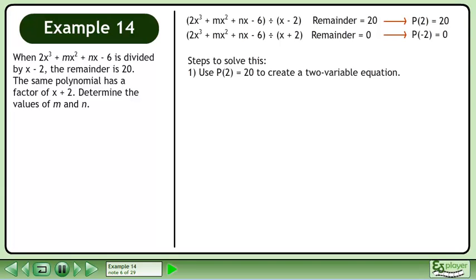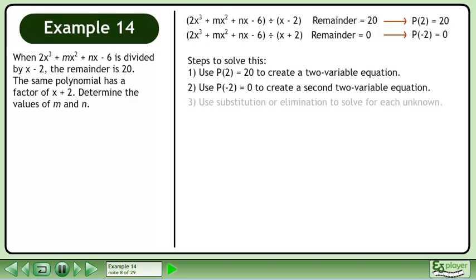Let's outline the steps required to solve this. First, use P(2) equals 20 to create a two-variable equation. Next, use P(-2) equals 0 to create a second two-variable equation. Finally, use substitution or elimination to solve for each unknown.